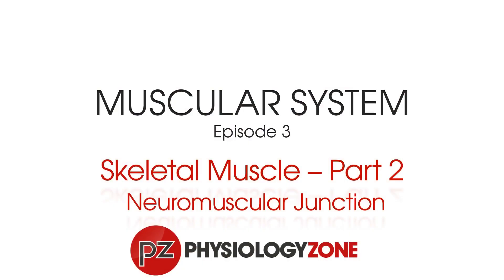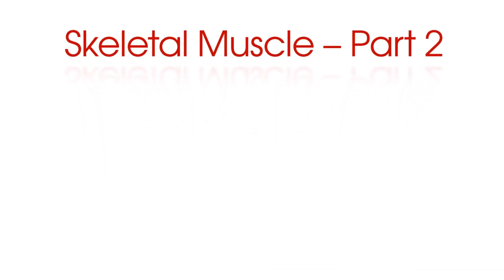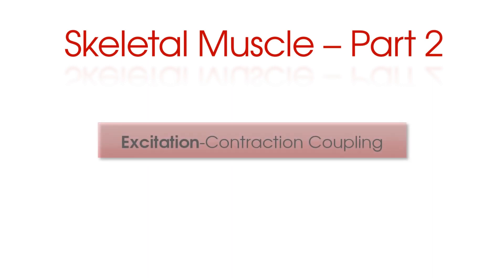Hi, this is Jack from Physiology Zone, and in this second part on skeletal muscle we're going to be focusing on the neuromuscular junction. This is all about how the action potential reaches and innervates the muscle, allowing it to contract. In the subsequent episode we're going to concentrate on contraction, so over the next two episodes we'll cover the excitation-contraction coupling.